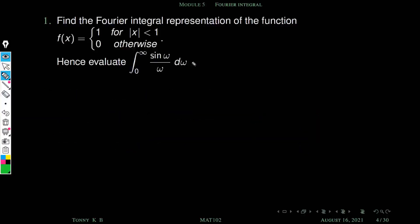Consider this problem. We will see how to evaluate these types of definite integrals using Fourier integral representation. Find the Fourier integral representation of f(x) = 1 for |x| < 1, and 0 otherwise. What is the structure of this function? First we need to draw this function.